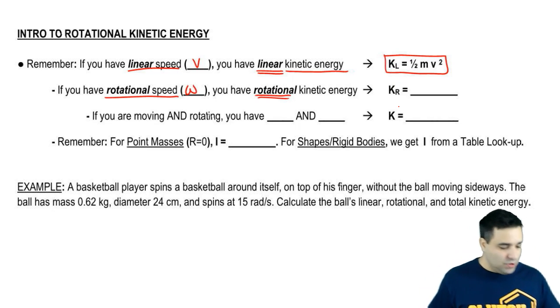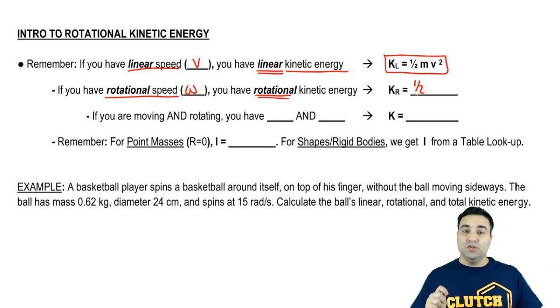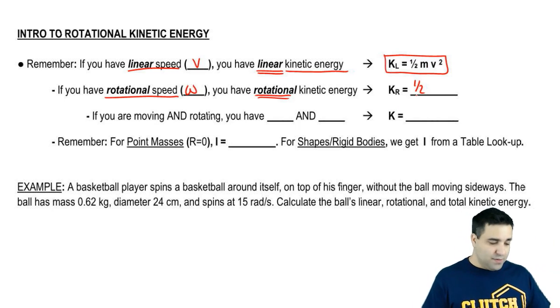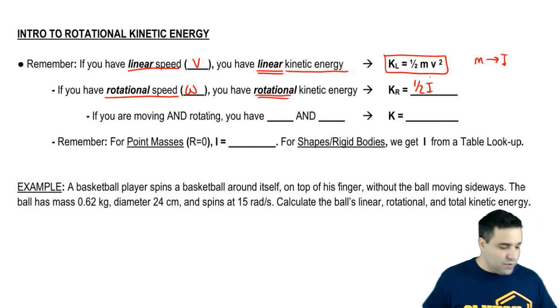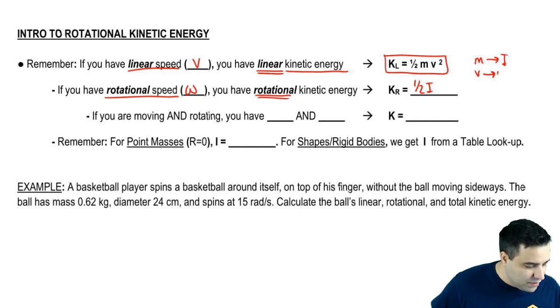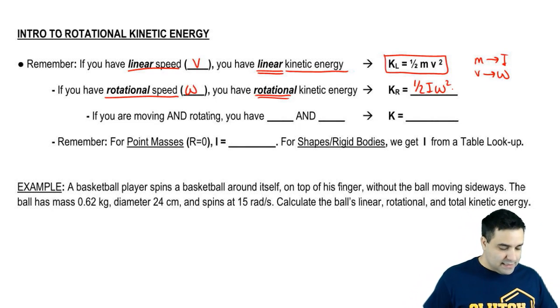Okay, now the equation is very similar. It's half. Now instead of using M, we're going to use the rotational equivalent of M, which is I, moment of inertia. And instead of V, we're going to use the rotational equivalent of V, which is omega. So if you remember the first equation, it should be easy to remember the second one.